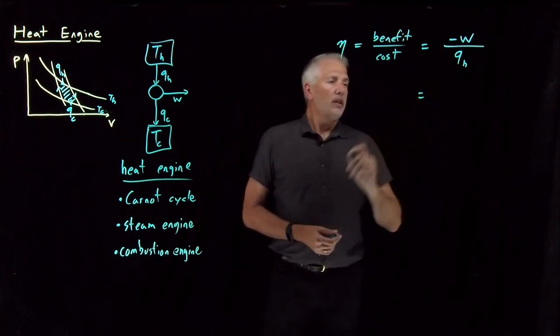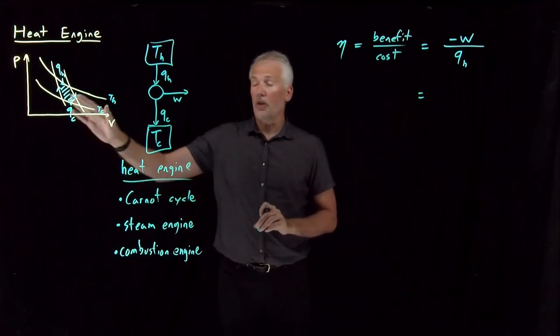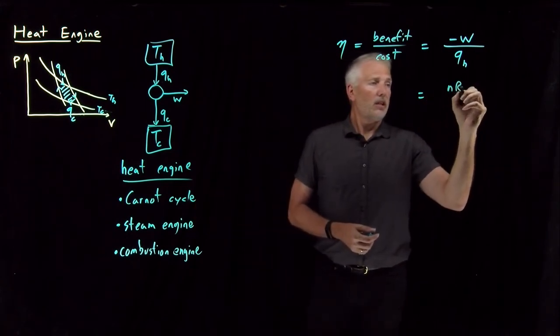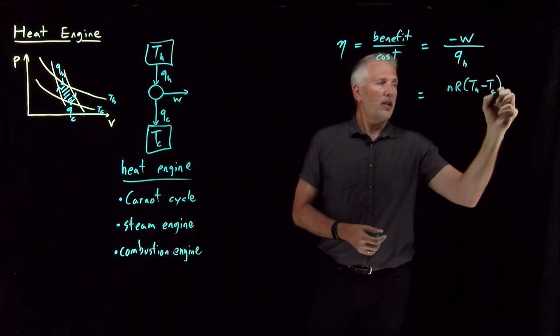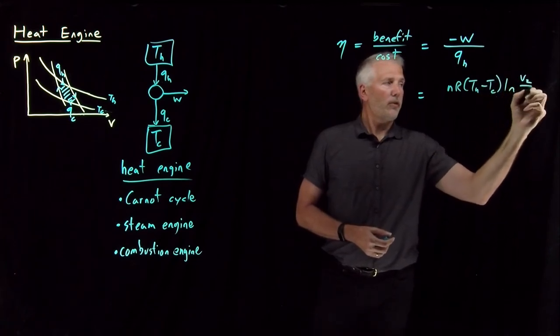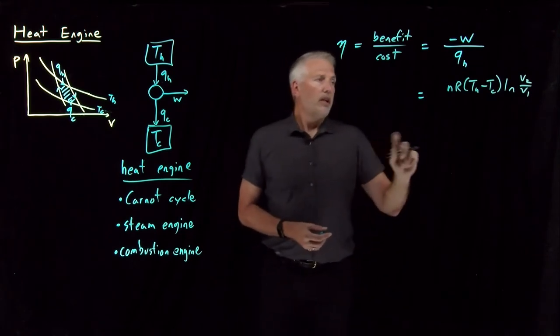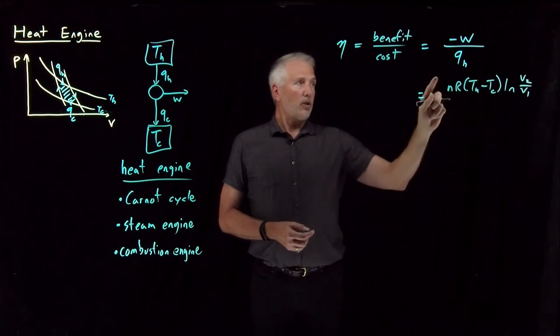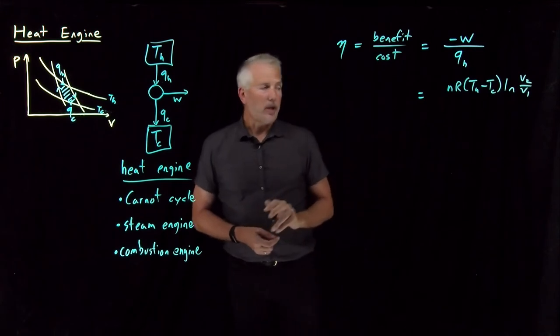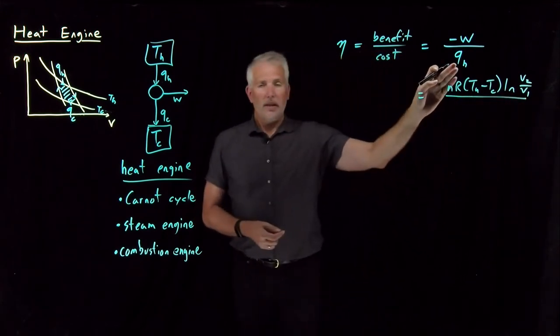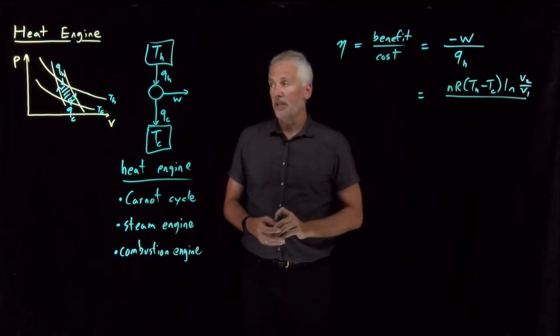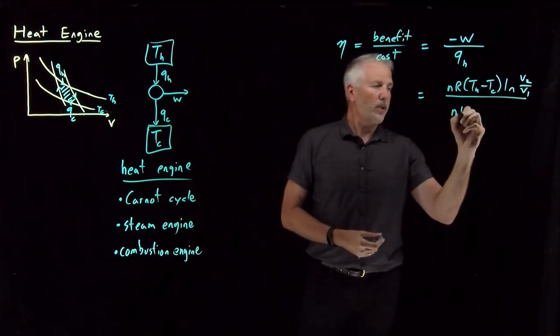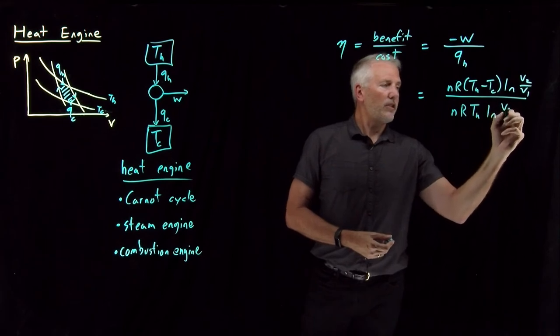We can then recall from our discussion, our more quantitative discussion of the Carnot cycle, what the net work for the whole process was. That was NR T hot minus T cold log V2 over V1 for the Carnot cycle. We had minus NR T hot minus T cold, so negative W. I just removed the negative sign when I write that down. The heat for the hot step in that process, remember the hot step was this reversible isothermal expansion, so the heat associated with that step we had was NR T hot log V2 over V1.